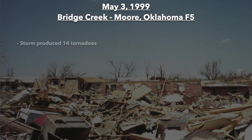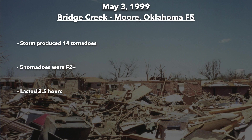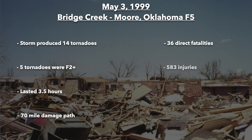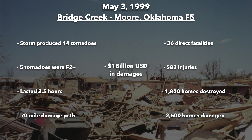In total, this storm produced 14 tornadoes, five of which were rated as strong or violent — F2 or higher — during its three and a half hour lifespan. The combined damage path length of all 14 tornadoes was over 70 miles. The Oklahoma State Department of Health recorded 36 direct fatalities. In addition, five people died of illness or accident during or shortly after the tornado and were not counted in the direct fatality total. The number of injuries was estimated at 583. An estimated 1,800 homes were destroyed and 2,500 homes were damaged, resulting in approximately $1 billion in damage.